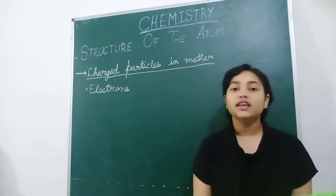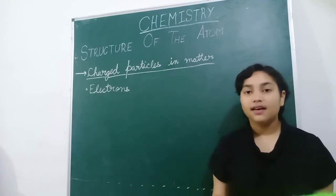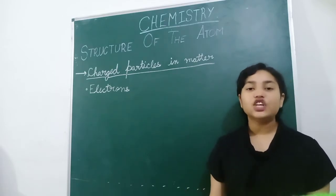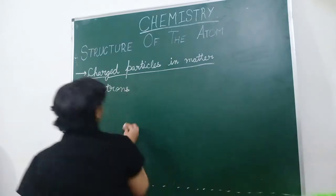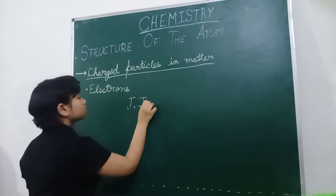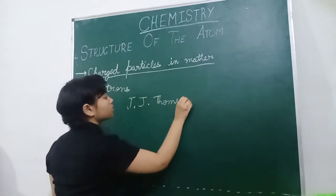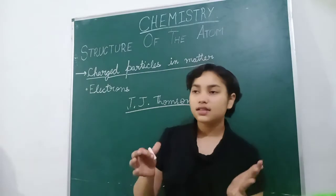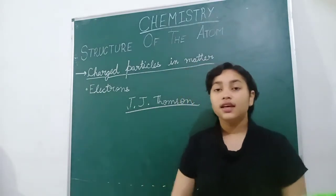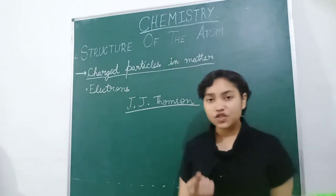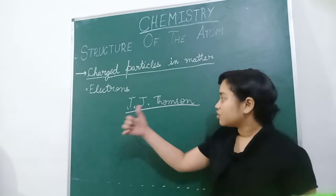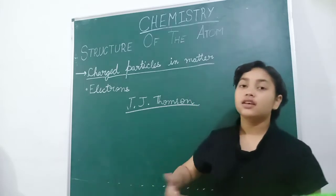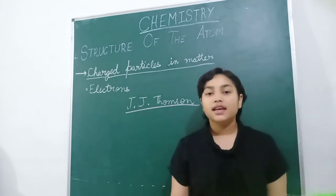Electrons were first discovered by J.J. Thomson. J.J. Thomson was a scientist who first discovered electrons, which are negatively charged particles carrying a negative charge. He proposed that by the coming of the 19th century, atoms are containing some charge — at least a single charge. J.J. Thomson discovered that the atom consists of charged particles, and those are known as electrons, and they are negatively charged.